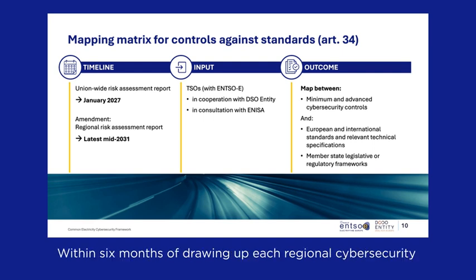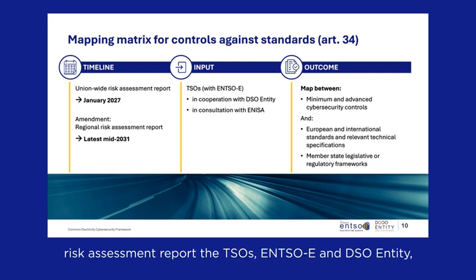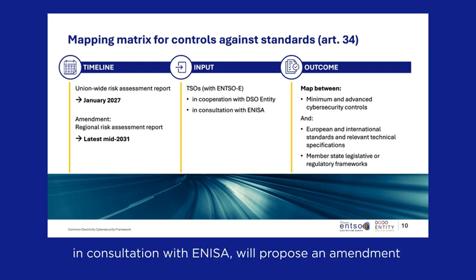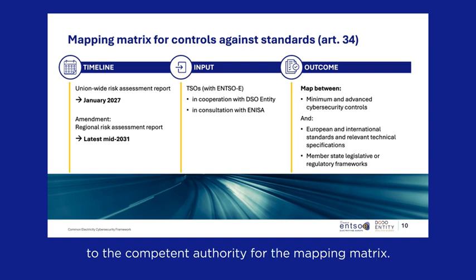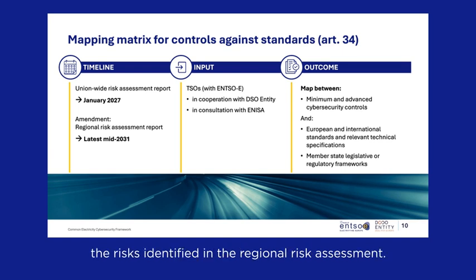Within six months of drawing up each regional cybersecurity risk assessment report, the TSOs, ENTSO-E and DSO Entity, in consultation with ENISA, will propose an amendment to the competent authority for the mapping matrix. The proposal will take into account the risks identified in the regional risk assessment.